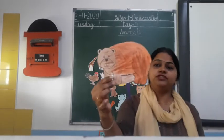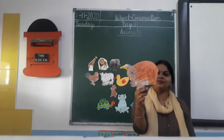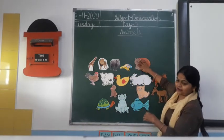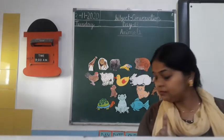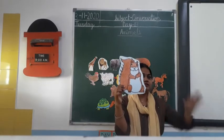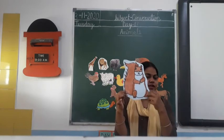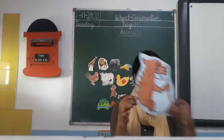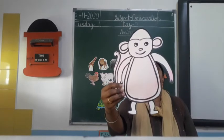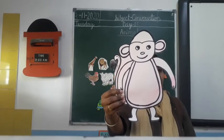Which animal is this? Bear. And tell me — what is this? Squirrel. Squirrel lives on a tree. And which animal is this? This is a monkey. Monkey also lives on a tree.